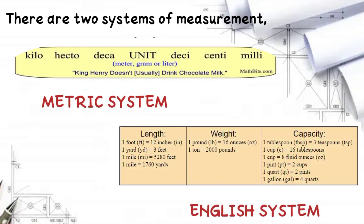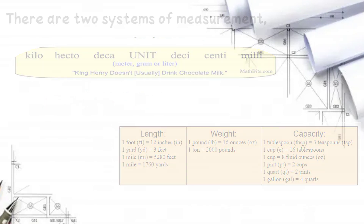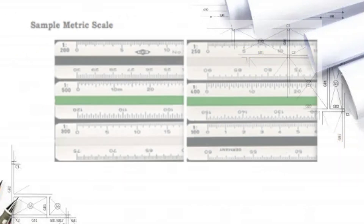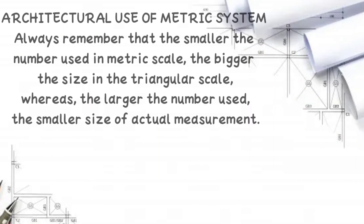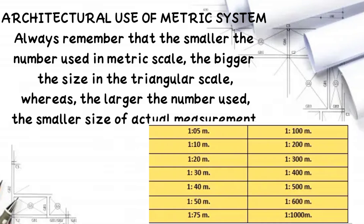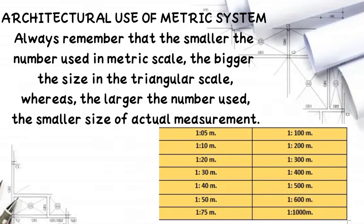Here is a sample metric scale. In the architectural use of the metric system, always remember that the smaller the number used in the metric scale, the bigger the size in the triangular scale, whereas the larger the number used, the smaller the size of the actual measurement.